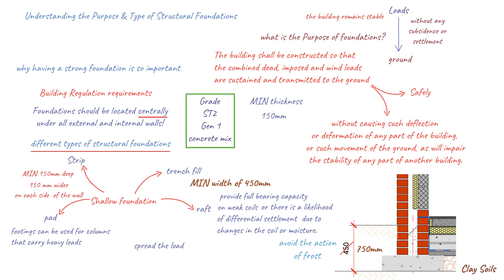Raft foundations spread the load over the area of the slab, thus reducing the bearing pressure to the ground — achieved through reinforcement of the slab. The extraction of moisture in clay soils can lead to volumetric changes in the soil, so a raft foundation can be used to ensure any depressions or downward movement of the subsoil can be accommodated, or the voids spanned by spreading the load over a wider area. Ground heave is caused when clay soils rehydrate, causing the clay to swell and push on the underside of the foundation. In these circumstances, a reinforced concrete slab can be employed which is suspended from a boot or edge beam, thus creating a void beneath the slab to accommodate any movements in the ground.